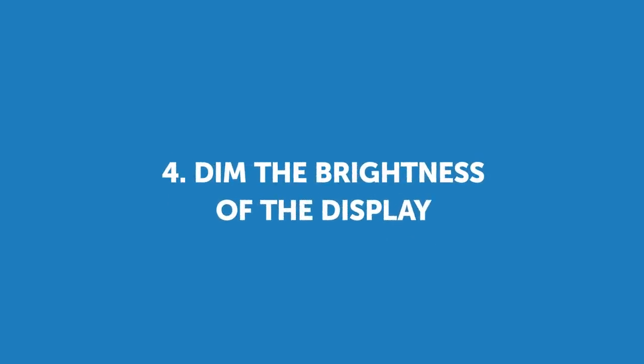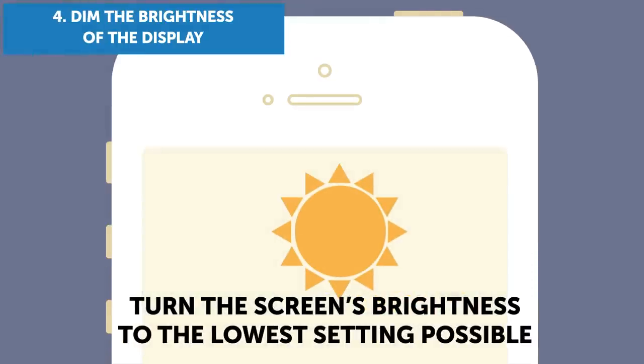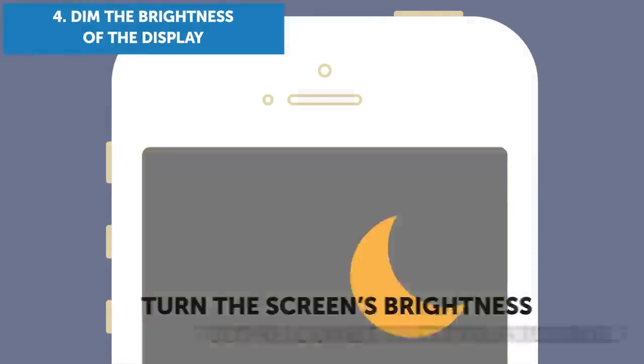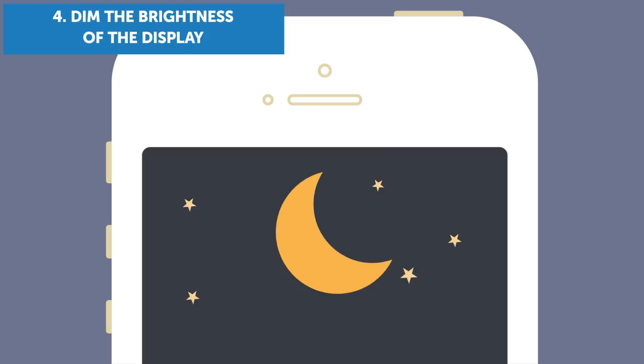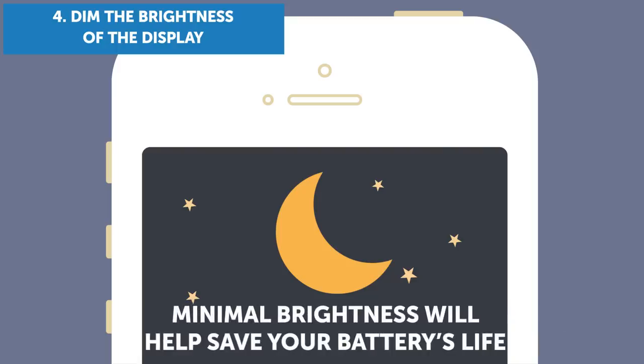4. Dim the brightness of the display. Turn the screen's brightness to the lowest setting possible, or at least as close to it as you can while still being able to see everything. A brightly lit screen is a true battery killer, which is exactly why minimal brightness will help save your battery's life.